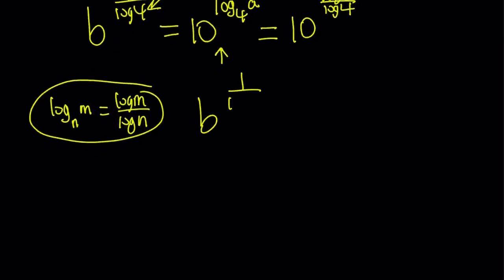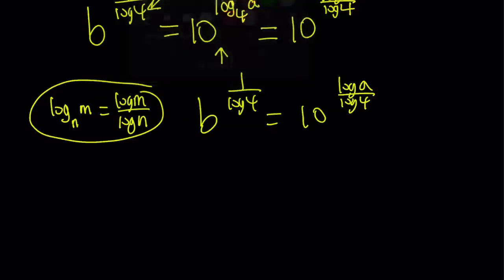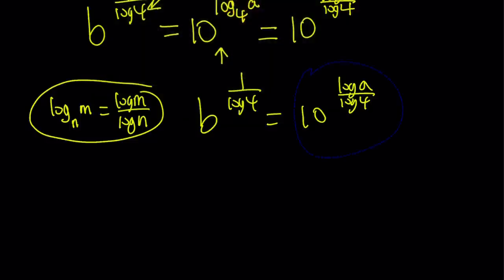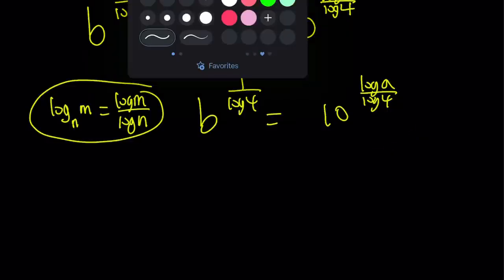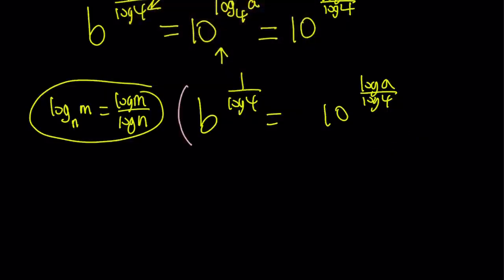b^(1/log 4) equals 10^(log a / log 4). Do you see what I see? Both of these expressions have the same denominator in their exponents. So what does that mean? It means we can raise both sides - I'd like to move this a little bit forward so that we can easily take the powers. So I'm going to raise both sides to the power log 4.